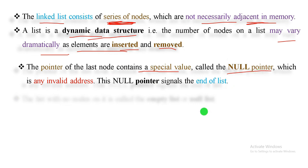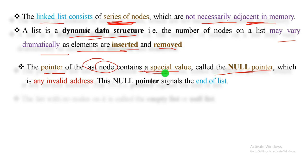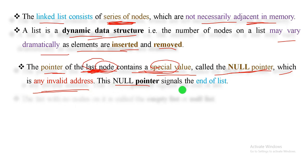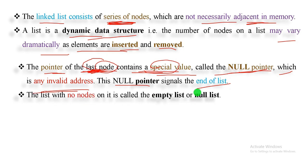Every node pointer is 0 (null) at the last node. The last node contains a special value — we call it the null pointer — which represents an invalid address. This signals the end of the list. The node consists of information plus a link field.